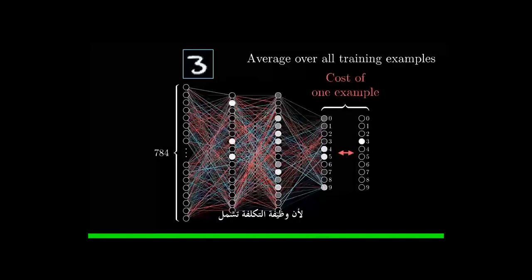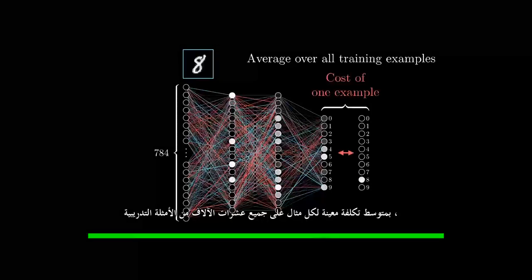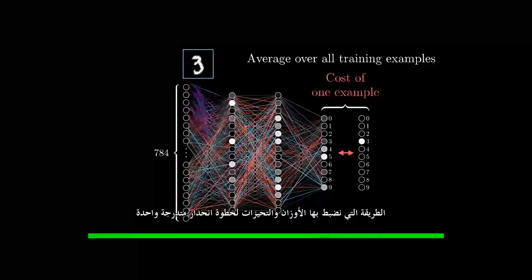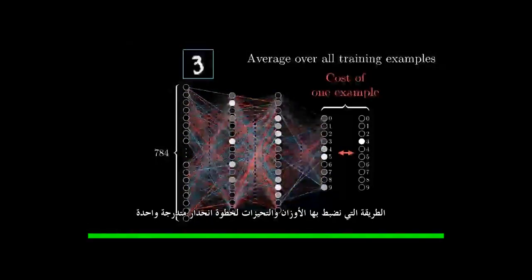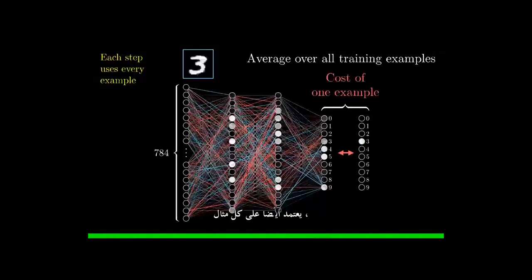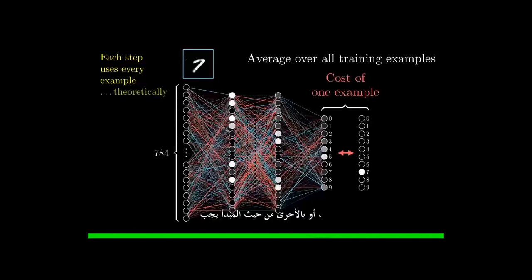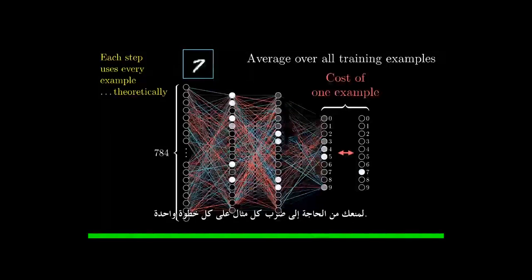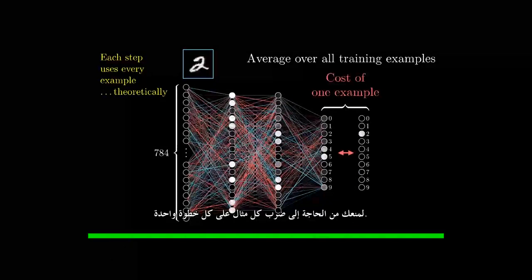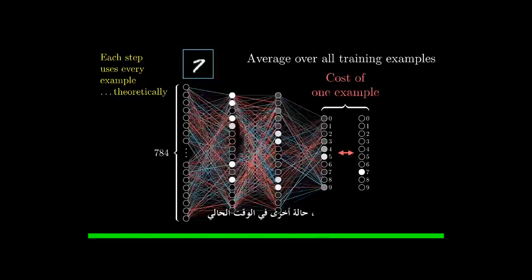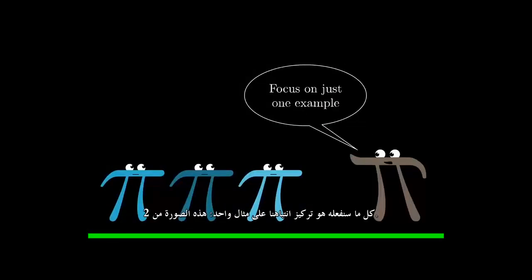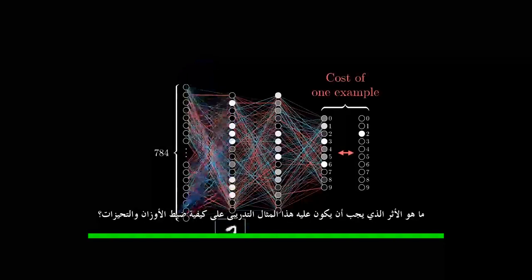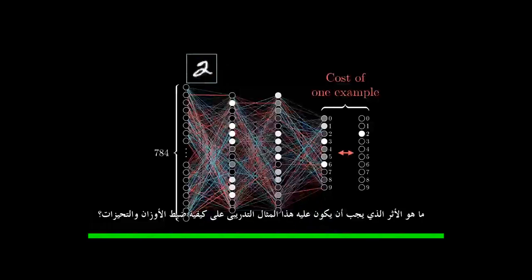Because the cost function involves averaging a certain cost per example over all the tens of thousands of training examples, the way that we adjust the weights and biases for a single gradient descent step also depends on every single example. Or rather, in principle it should, but for computational efficiency we're going to do a little trick later to keep you from needing to hit every single example for every single step. In other case, right now, all we're going to do is focus our attention on one single example, this image of a 2. What effect should this one training example have on how the weights and biases get adjusted?